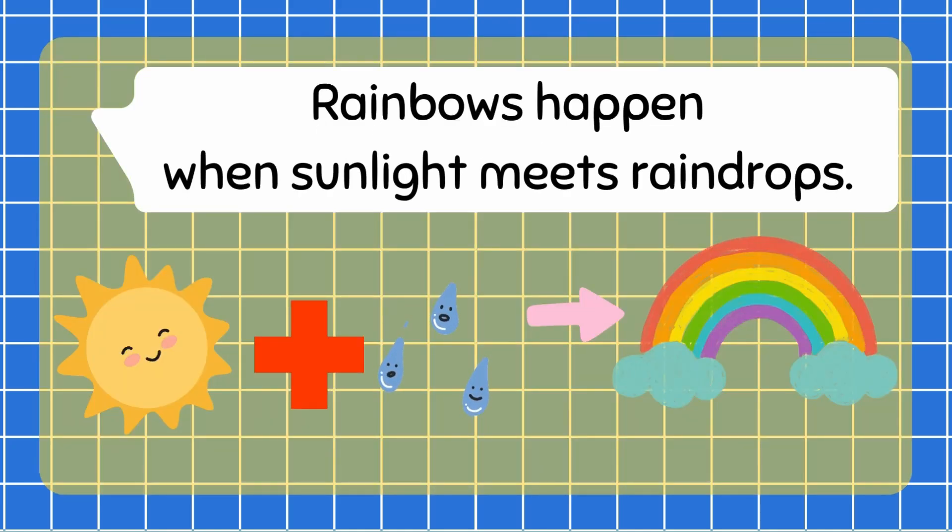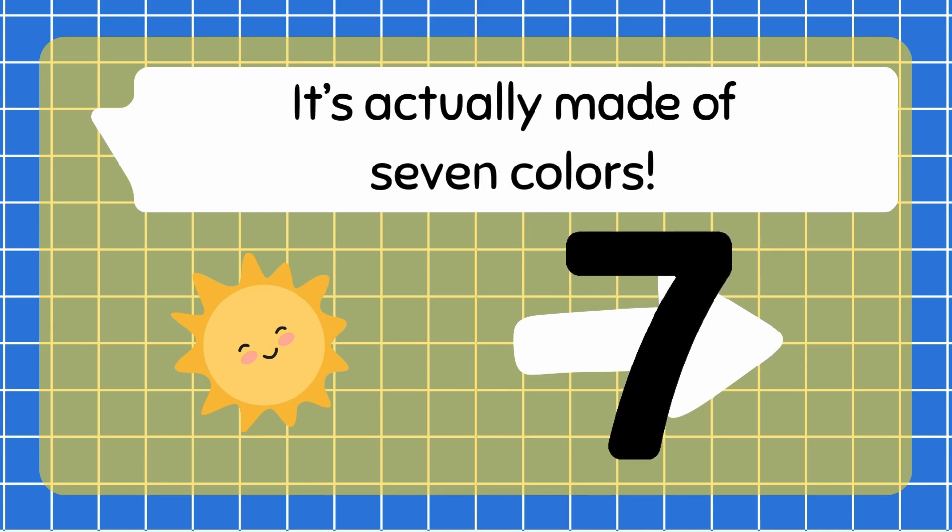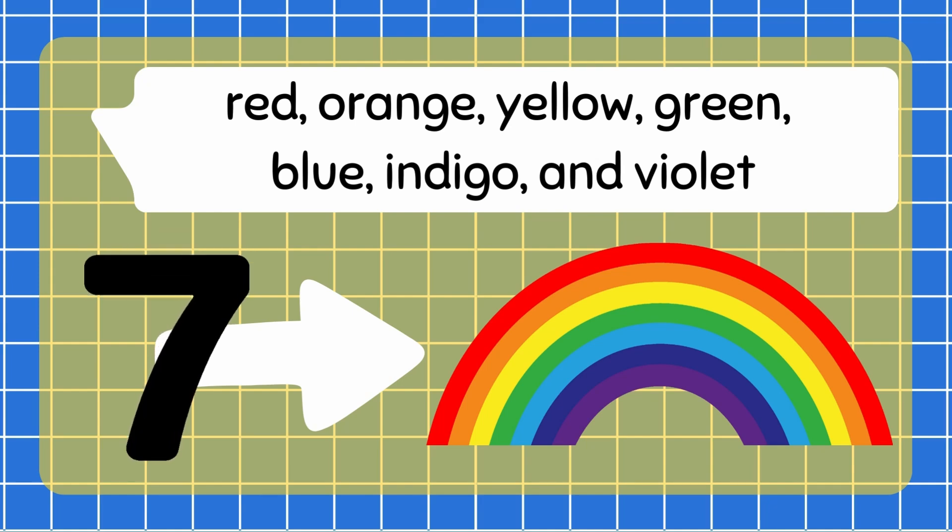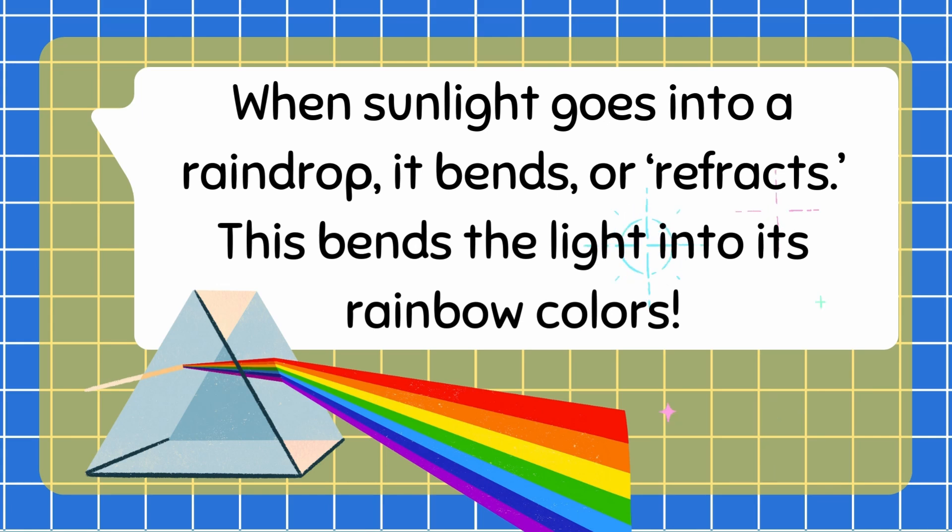Rainbows happen when sunlight meets raindrops. Sunlight looks white, but guess what? It's actually made of seven colors: red, orange, yellow, green, blue, indigo, and violet. Let's say it together: red, orange, yellow, green, blue, indigo, and violet!